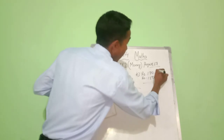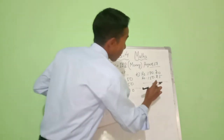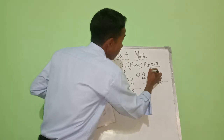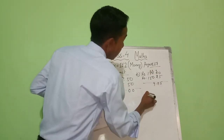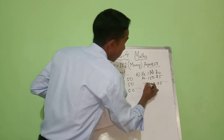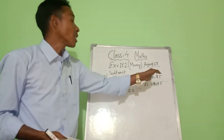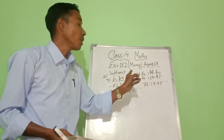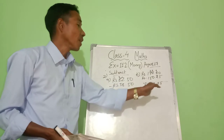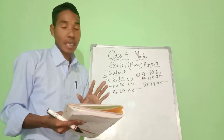Five minus zero is five. Nine minus two is seven. Six minus five is one. So the answer is 19 rupees 75 paise. From 170 rupees, if you deduct 150 rupees 25 paise, 19 rupees 75 paise is left — that is our answer. It's very easy!